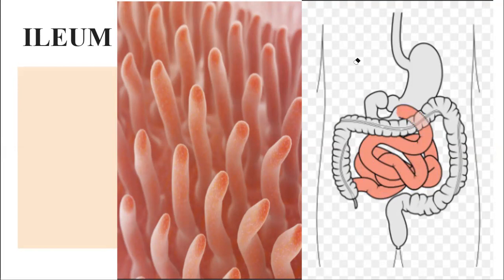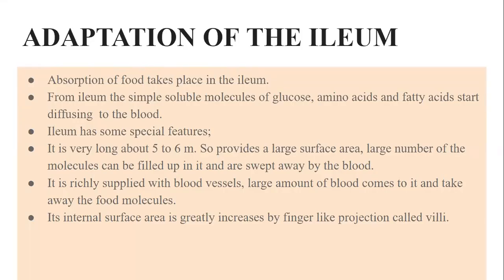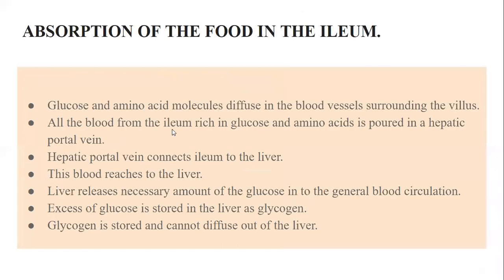After digestion is completed in the duodenum, the food — now in a very simple, liquid form — starts filling up in the ileum. The fine molecules, the simplest molecules of glucose, amino acids, and fatty acids from the ileum, begin diffusing into the blood. So our blood is now receiving the digested food molecules from the ileum.